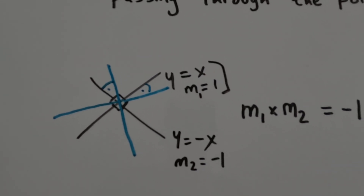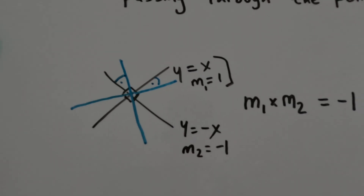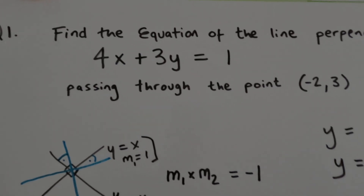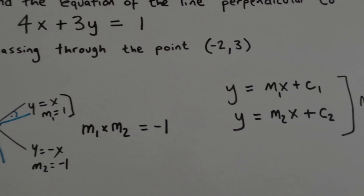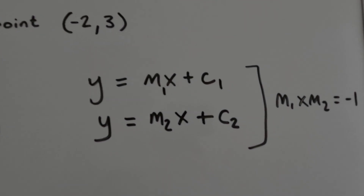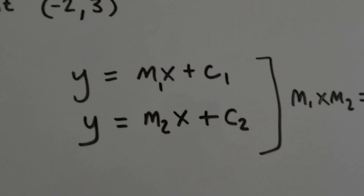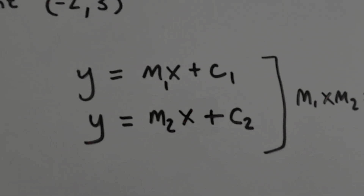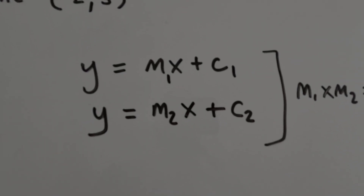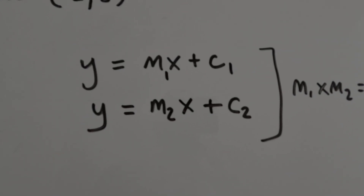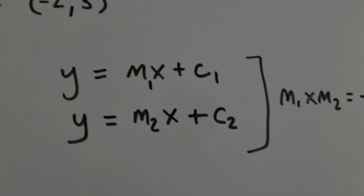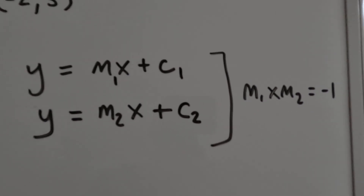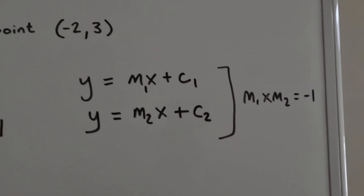We will need to know this and use it to answer the question. So if you've got two lines y equals m1x plus c1 and y equals m2x plus c2, then m1 times m2 is minus 1. That's what we're going to be using.